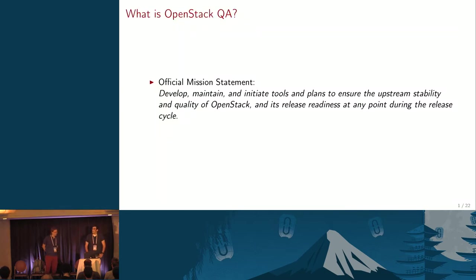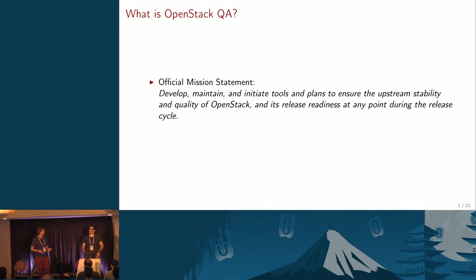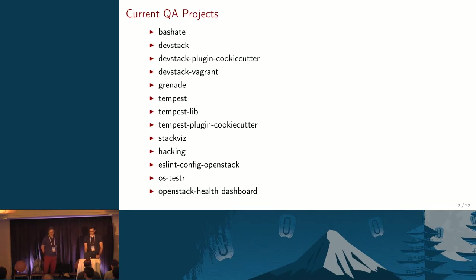We are from the OpenStack QA team, so just quoting our mission statement — what is our team about. We care about OpenStack quality and stability throughout the cycle, so we work and develop new tools or maintain existing tools used for that, so that the entire ecosystem can ensure quality throughout the cycle. We have a number of different projects that we care about. A few of them are related to syntax check tools like Bash8, hacking, or S-Lint config OpenStack — yeah, for JavaScript.